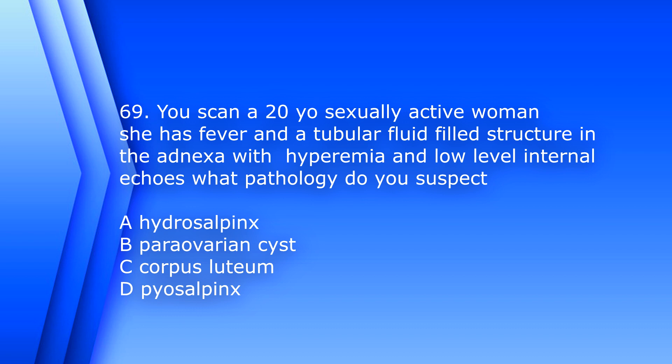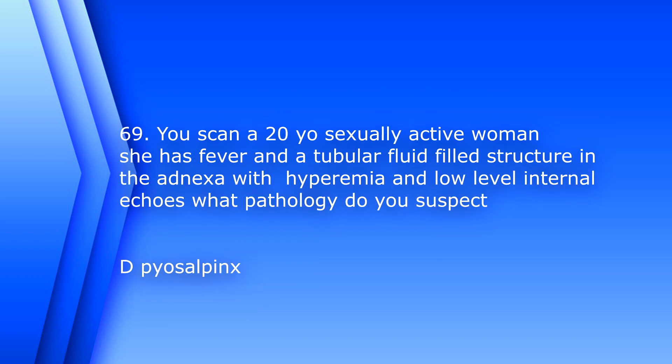Question 69. You scan a 20-year-old sexually active woman. She has fever and a tubular fluid-filled structure in the adnexa with hyperemia and low-level internal echoes. What pathology do you suspect? A. Hydrosalpinx, B. Para-ovarian cyst, C. Corpus luteum, D. Pyosalpinx. The answer is D, Pyosalpinx — which would be pus within the fallopian tubes.